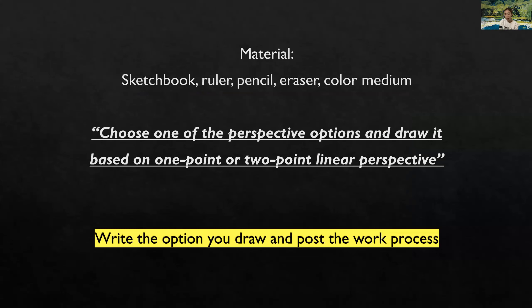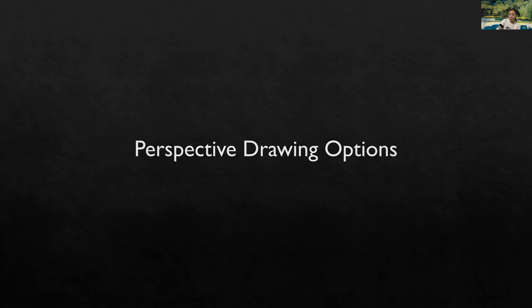For this project, you will need a sketchbook and a ruler to find the angle of the perspective, plus pencil, eraser, and any color medium you have. I will give you nine options — please choose one and draw it based on one-point or two-point linear perspective. Please write which option you choose, and post your work process image by tonight on the Moodle room, and by tomorrow reply to your peers. The options file is posted in the Week 11 page so you can see it while you are drawing.